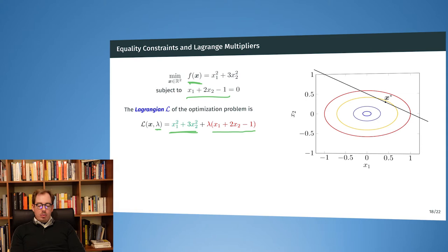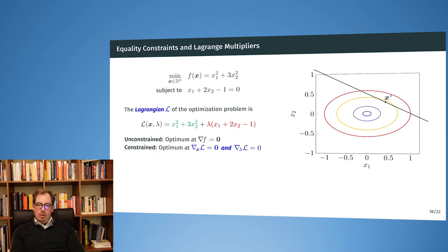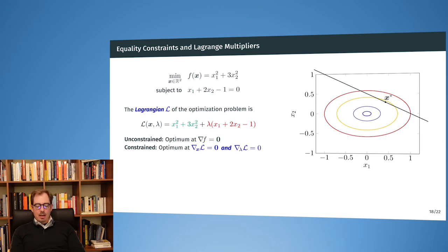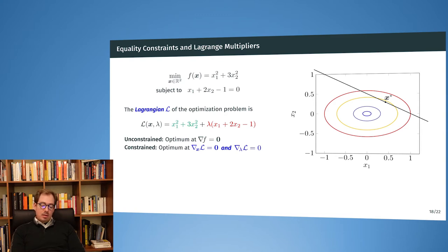Now I want to solve my optimization problem, and the optimum solution lies at the point where the gradient of the Lagrangian is 0. Similar to the Newton method, which finds the point where the gradient of the function is 0 — in an unconstrained convex problem, the only point where the gradient is 0 is the minimizer. Here we look for a point where the gradient of the Lagrangian is 0, not only with respect to x, but also with respect to lambda.